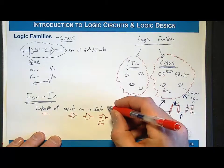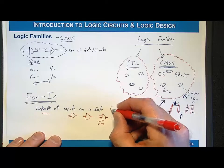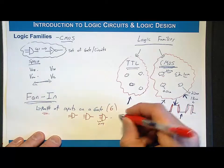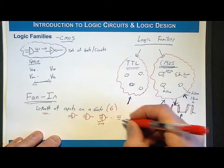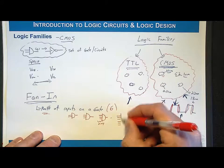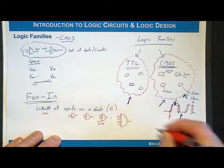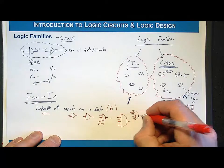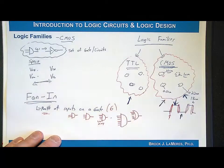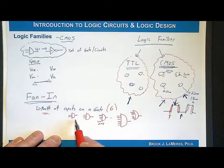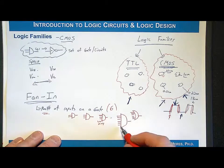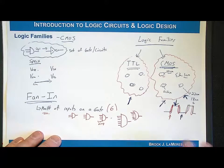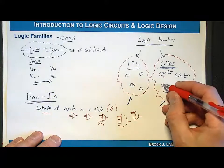If I came in and said I've got a fan-in of six, what does that mean? That means the largest number of inputs on any gate would be six. I could have a six-input AND gate, a six-input OR gate. It doesn't mean you can't have a two-input and a four-input. It just means the maximum number is six.